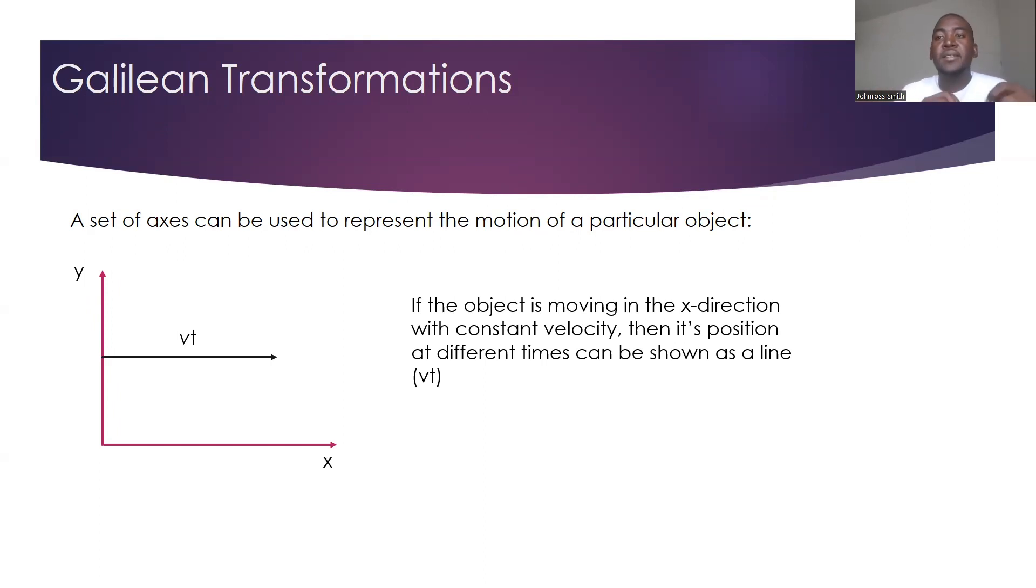And vt is the formula that we will use to find the distance that is being moved in that frame. Because speed equals the distance over time. So distance would be the speed times the time. So v is the speed multiplied by the time.